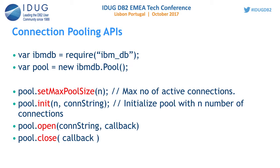ODBC CLI drivers do not handle connection pooling, so this driver came up with connection pooling features. You can have N number of connections available at the start of the application. When you need a connection later, just get one from the pool. Getting a connection from the pool is much faster and avoids waiting time. Normally a real connection takes one to two seconds depending on server and network speed, but getting a connection from the pool takes only milliseconds or microseconds.